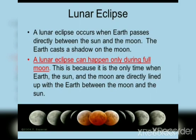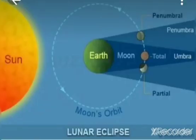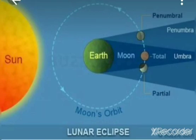Now, lunar eclipse. A lunar eclipse occurs when the earth passes directly between the sun and the moon. The earth casts a shadow on the moon. A lunar eclipse can happen only during the full moon. This is because it is the only time when the earth, sun and the moon are directly lined up, with the earth between the moon and the sun. This is the diagram of lunar eclipse. As you see in the diagram, earth comes in between the sun and the moon. You also see a circle around the earth — this is the moon's orbit, meaning the moon revolves around the earth. In the diagram, you can also see the umbra region and penumbra region.